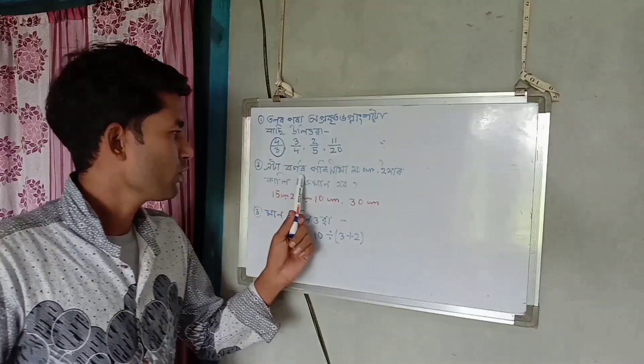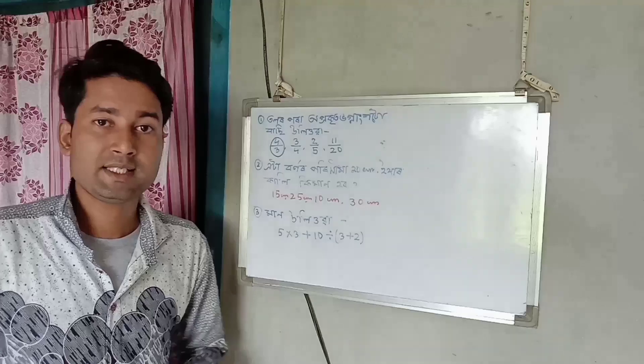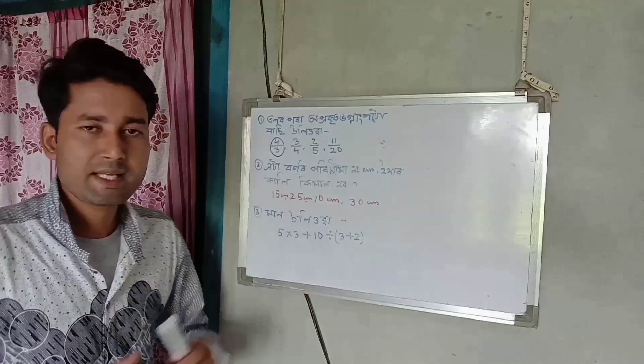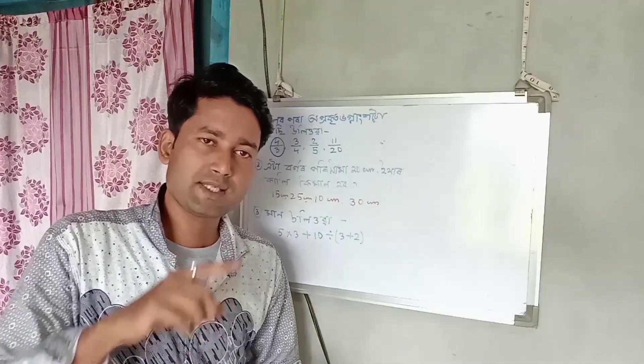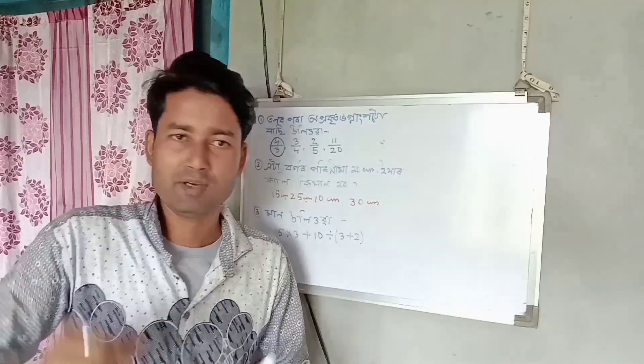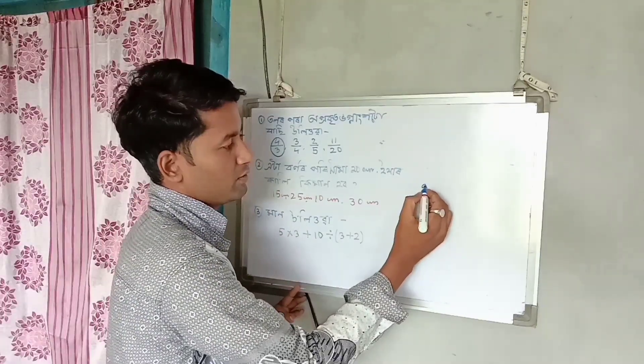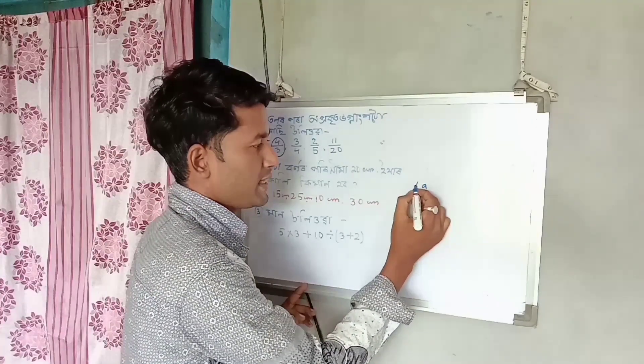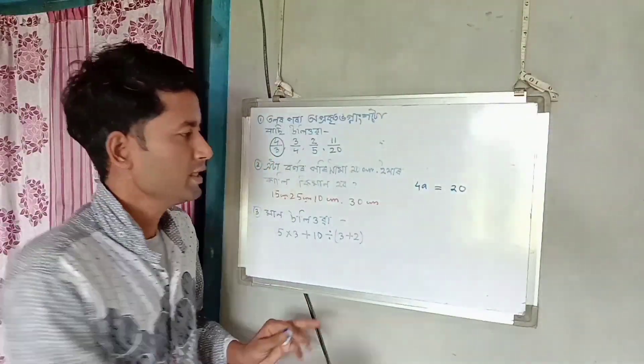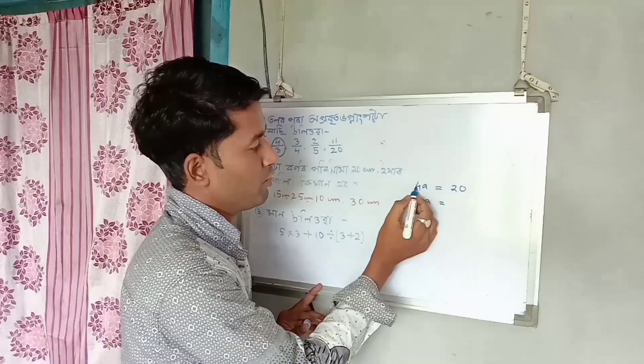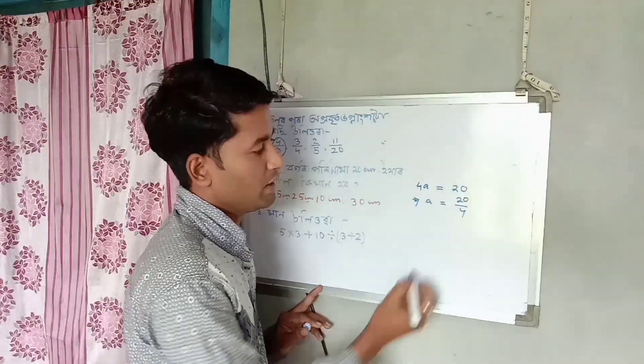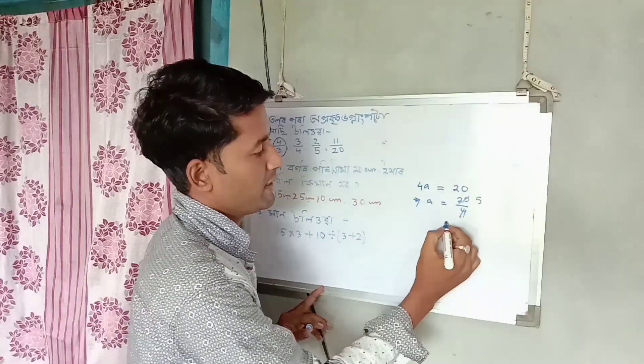The second question asks: if the perimeter is 20 cm, then what is the value? First, we need to know the formula for square perimeter. Square means a shape where all four sides have equal length. If one side is 5 cm, then all sides are 5, 5, 5, 5. If we say the side is 'a', then all four sides equal 4a. And the perimeter given is 20.